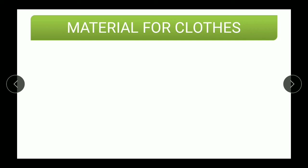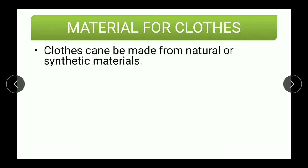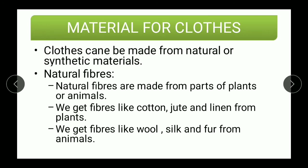Now, material for clothes. There are two kinds of materials used for clothing — one is natural and another is synthetic. Natural fibers or natural clothes are made from parts of plants or animals. We get fibers like cotton, jute, and linen from plants, whereas fibers like wool, silk, and fur we get from animals.